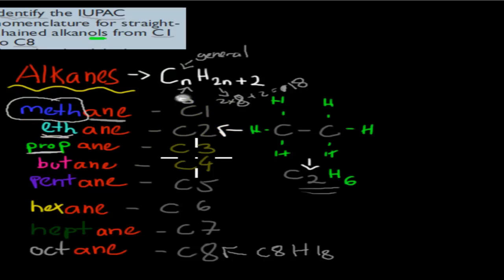PROP stands for 3 carbons, BUT stands for 4 carbons, PENT for 5 carbons, HEX for 6 carbons, HEPT for 7 carbons, and OCT for 8 carbons.